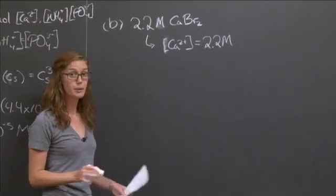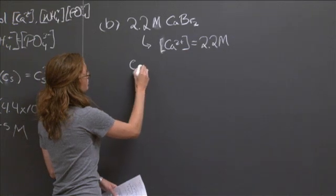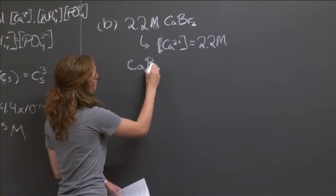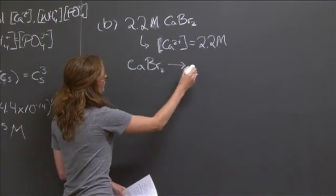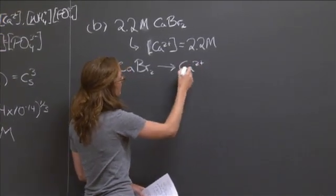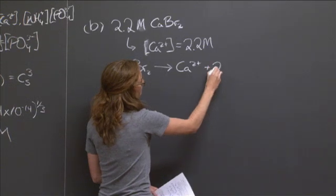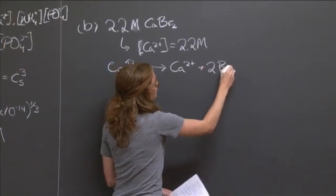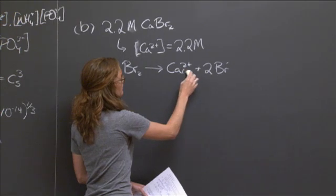Because we're told that it completely dissociates. So if we look at the dissociation reaction, we see that for every mole of calcium bromide, we get one mole of calcium and two moles of bromide. And these are aqueous.